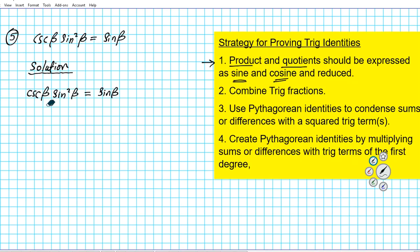Alright, so if we take a look at what we have here, we have cosecant which can be written in terms of sine. Implementing the reciprocal identity, cosecant can be written as one over sine beta. And then sine square beta, using properties of exponents, we know this is sine beta times sine beta. And on the right side we just have sine beta.